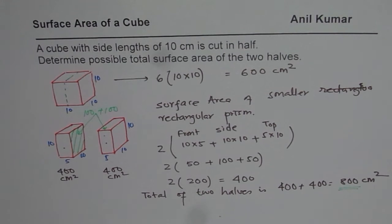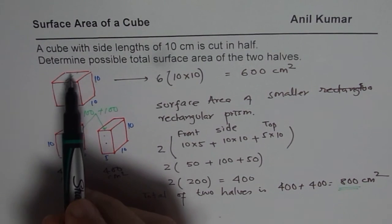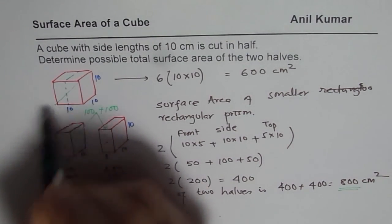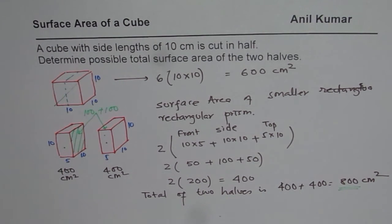Now for some of the students, here is a bonus question. And that is, instead of cutting it from the center as we did, if we cut it diagonally, in that case, what is going to be the combined surface area of two equal halves? I hope that challenging question will be interesting. Thank you and all the best.